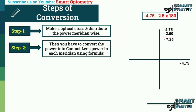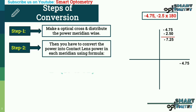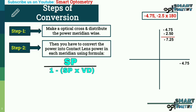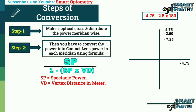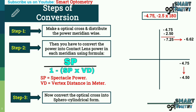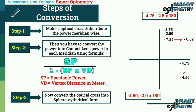Step 2: Convert spectacle power into contact lens power in each meridian using the formula SP divided by (1 minus SP multiplied by VD), where SP equals spectacle power and VD equals vertex distance in meters. Step 3: Convert the optical cross back into sphero-cylindrical form to get the final contact lens power.